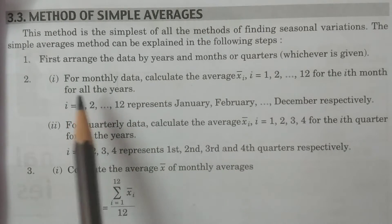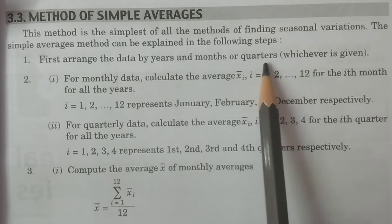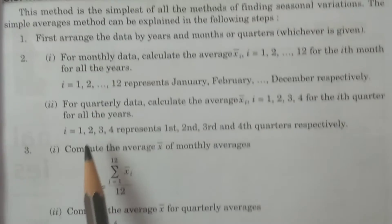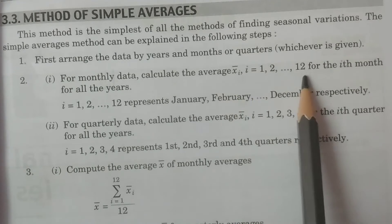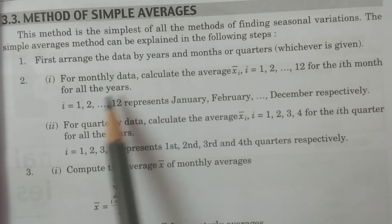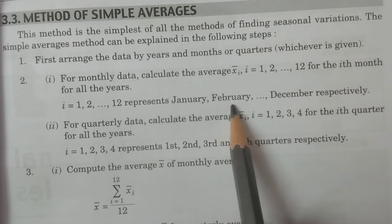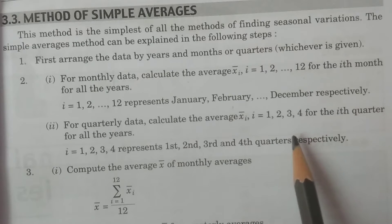In the method of simple averages, first arrange the data by years and months, or years and quarters. For monthly data, calculate averages x̄ᵢ for i = 1 to 12 — for each month across all years. For example, with three years of data, calculate the January average across three years, then February, and so on through December.